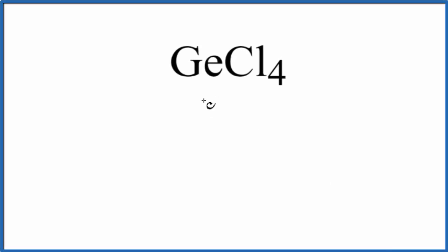In this video, we'll write the Lewis structure for GeCl4. Let's first count the valence electrons. Ge, that's in the same group as carbon, group 14, sometimes called 4A.